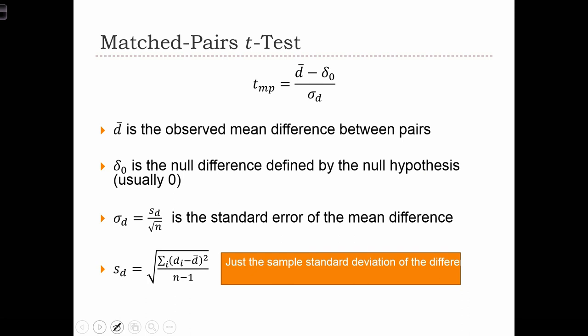The matched-pairs t-test is really simple. All we're going to do is calculate the sample difference of means and subtract that from the difference of means under the null hypothesis.